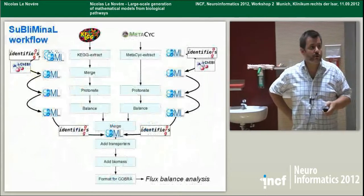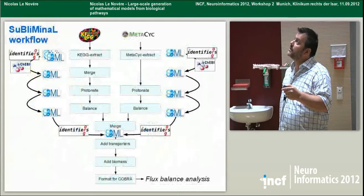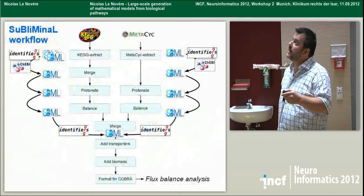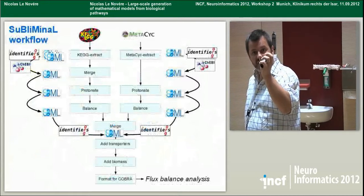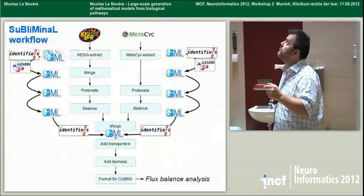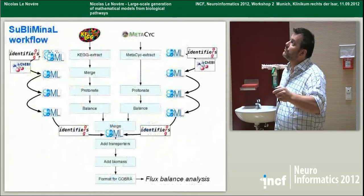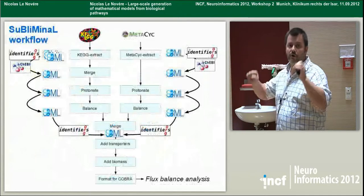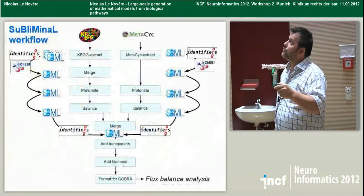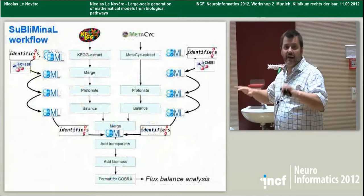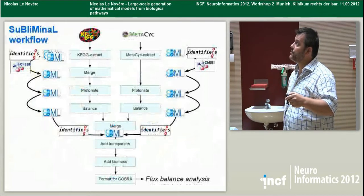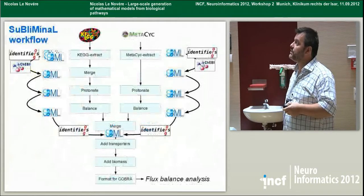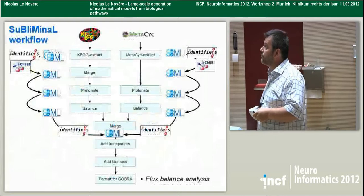Starting with the whole-genome reconstruction: we take information from KEGG, extract it, convert it to SBML, and annotate with identifiers.org URIs — URIs that identify exactly all elements of the model. We do the same for MetaSight. We then merge the information from KEGG and MetaSight using those identifiers. We protonate on both sides, mass-balance the equations, merge them, add transporters, add the biomass, and then generate the FBA models.